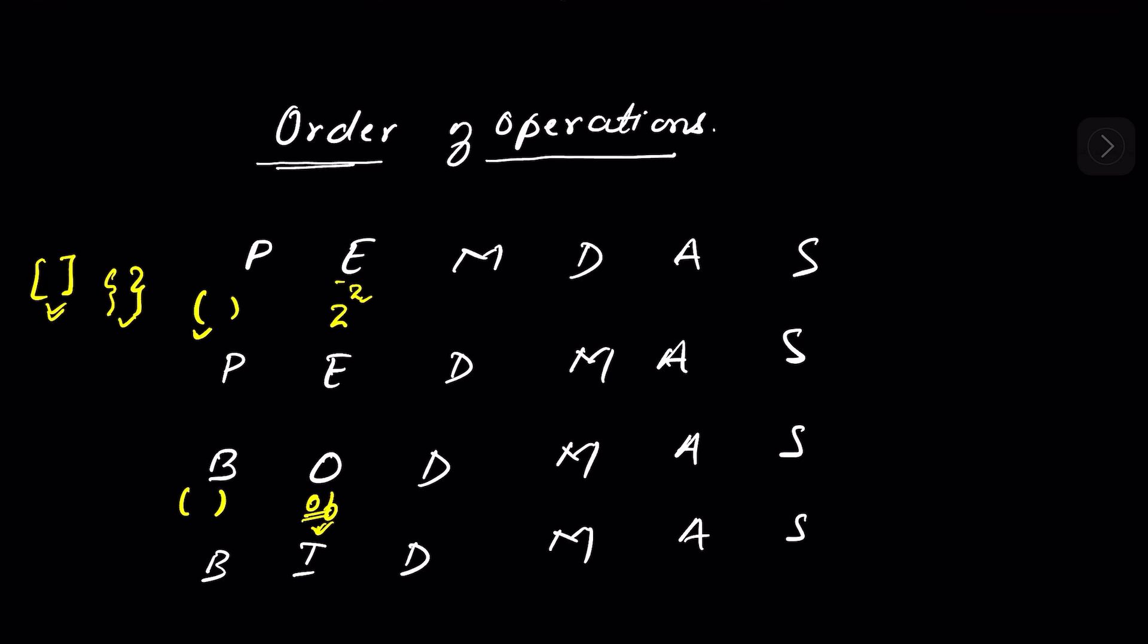M for multiplication, D for division, A for addition, and S for subtraction. Now you can see that in PEMDAS we have multiplication then division, and in PEDMAS we have division then multiplication. The same goes with BODMAS and BIDMAS.